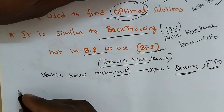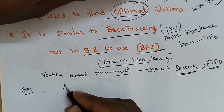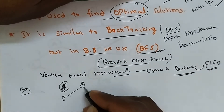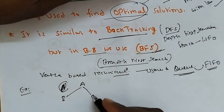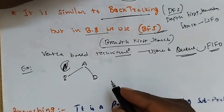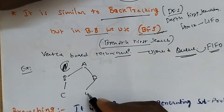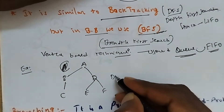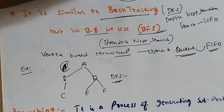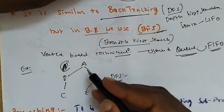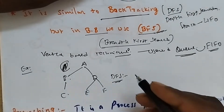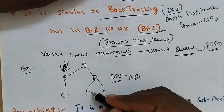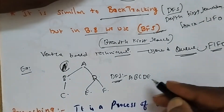Let me give an example diagram. Consider a tree with nodes A, B, C, D, E, F. Using DFS — depth first search — traversal goes from top to bottom: A, B, C, then D, E, and last F.